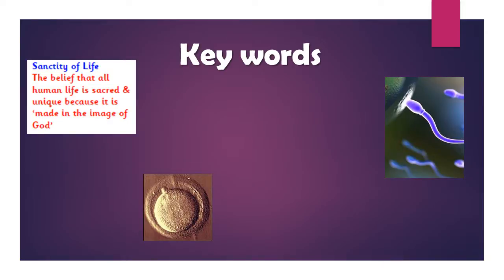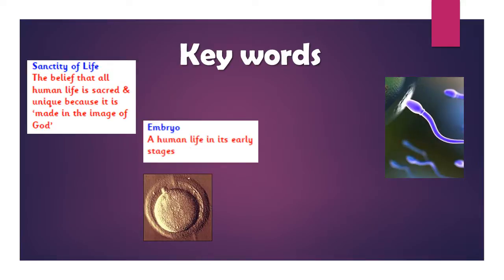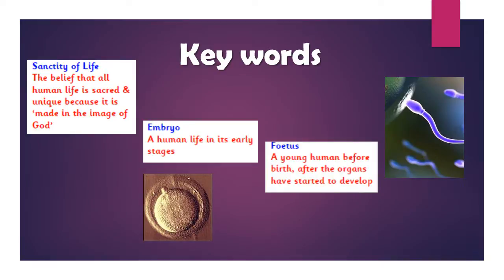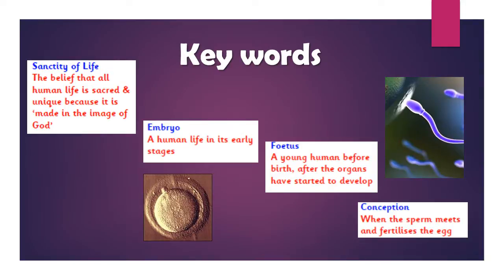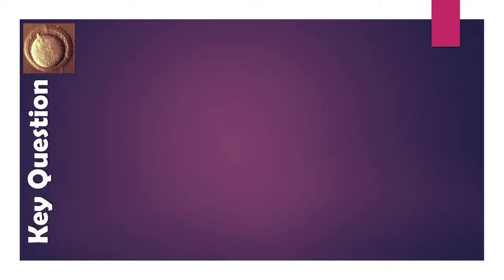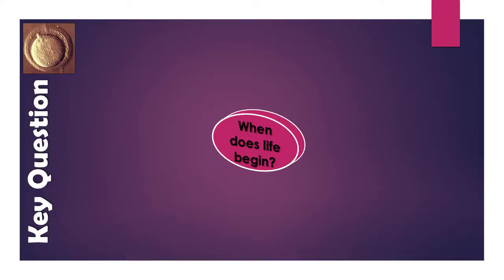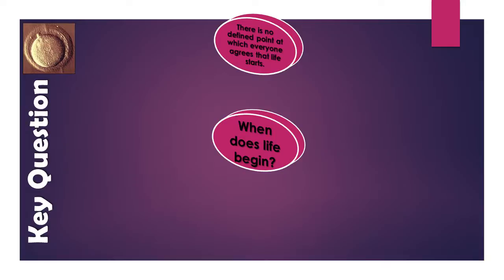Some key words: the sanctity of life is really key in this discussion — from a religious point of view, it is the idea that all human life is sacred, unique, and made in the image of God. An embryo is a human life in its very early stages, at the cell stage. A fetus is when the embryo has developed further, with organs and features that start to recognise it as a human being. Conception is when the sperm and egg meet and the embryo is formed. A key question in the discussion is: when does life begin? There is no single agreed point, and that is where the abortion debate is so vehement on both sides.